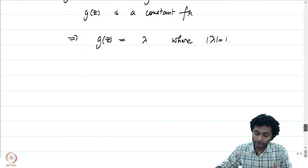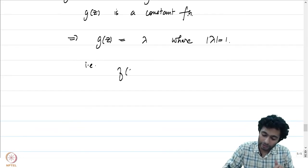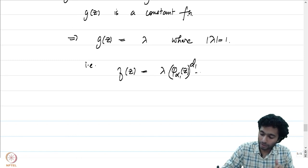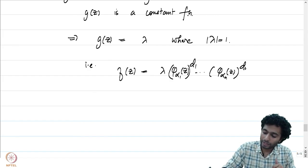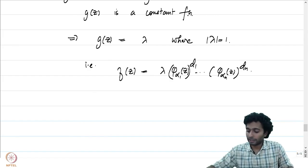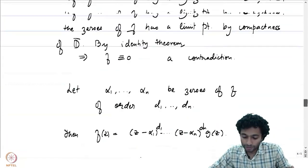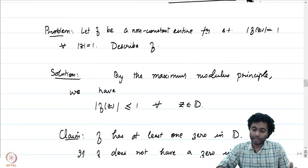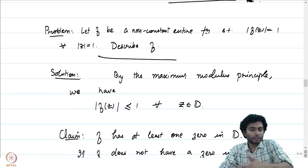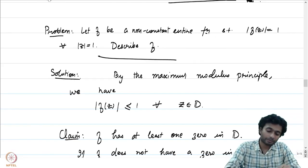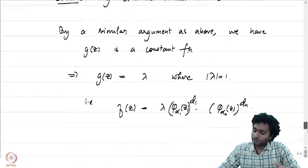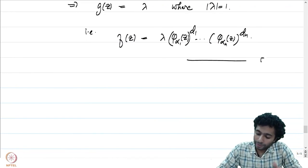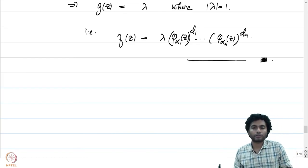Therefore g(z) = λ where |λ| = 1, which means f(z) = λ · phi_{alpha_1}(z)^{d_1} · ... · phi_{alpha_n}(z)^{d_n}. This is precisely the description of the function f — these are what are classically known as finite Blaschke products.